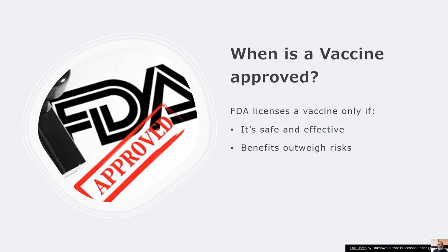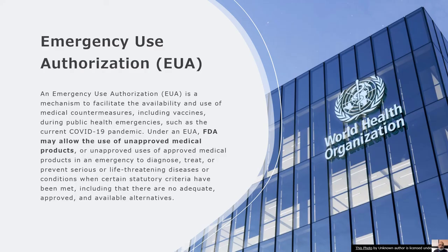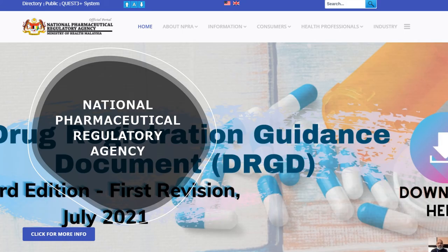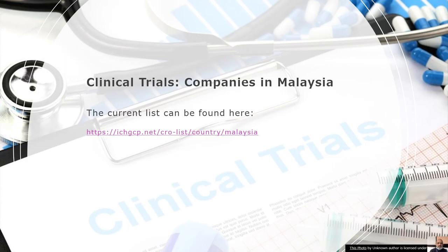A vaccine will be approved by the FDA when it is safe and effective and the benefits outweigh the risks. In the case of pandemics, there is an Emergency Use Authorization, whereby the FDA may allow the use of unapproved medical products or unapproved use of approved medical products in an emergency to diagnose, treat, or prevent serious or life-threatening diseases or conditions where certain statutory criteria have been met, including that there are no adequate approved and available alternatives. The National Pharmaceutical Regulatory Agency is the agency in Malaysia which approves vaccines. Each country will have its own regulatory authority which derives its approval from adequate guidance and prior records.